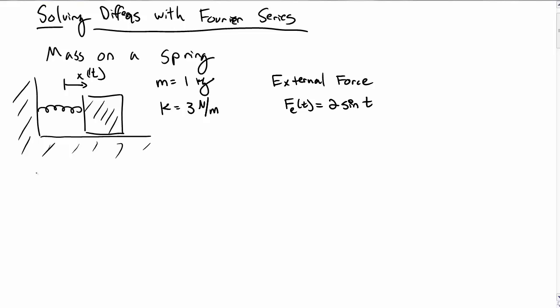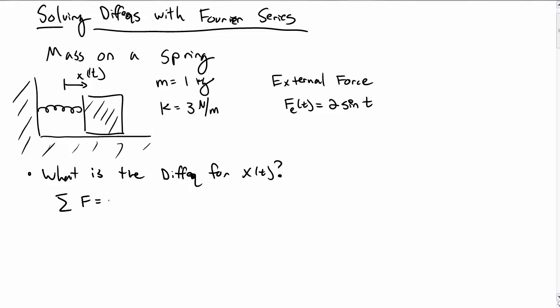In this video, I want to investigate how to solve differential equations using the Fourier series. Consider a mass on a spring described by the position x of t, with a mass of one kilogram, a spring constant of three newtons per meter, and a sinusoidal external force. Let's start by asking what is the differential equation for this x of t, and then we'll get into the Fourier series part.